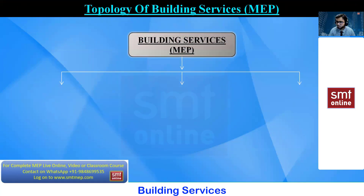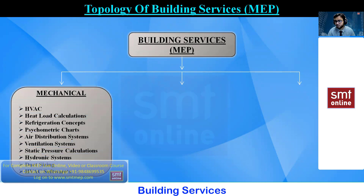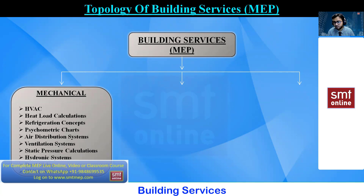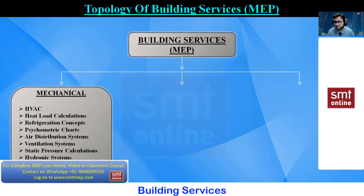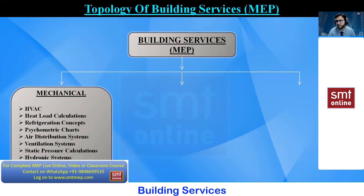Now we look at the topology of the building — especially the MEP area. First is the mechanical department. As a mechanical engineer in a construction company, the main department is HVAC — Heating, Ventilation, and Air Conditioning. Many electrical engineers think HVAC means high voltage alternate current, but in mechanical it stands for Heating, Ventilation, and Air Conditioning. To maintain the human comfort temperature of 22 to 26 degrees centigrade, we require a centralized air conditioning system.